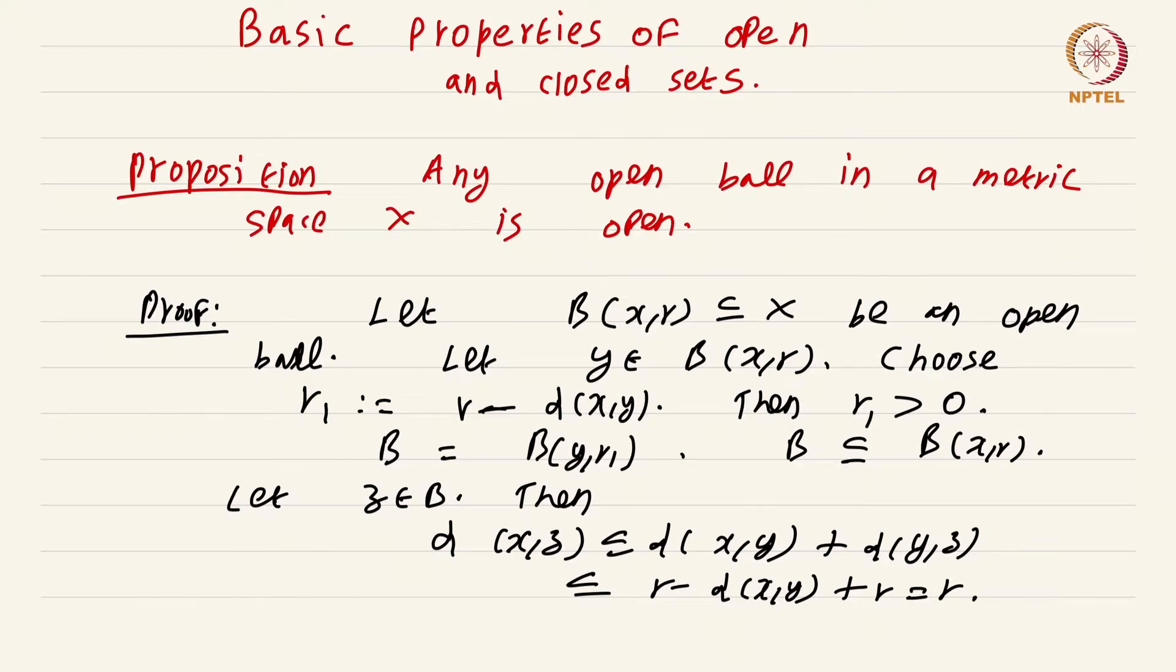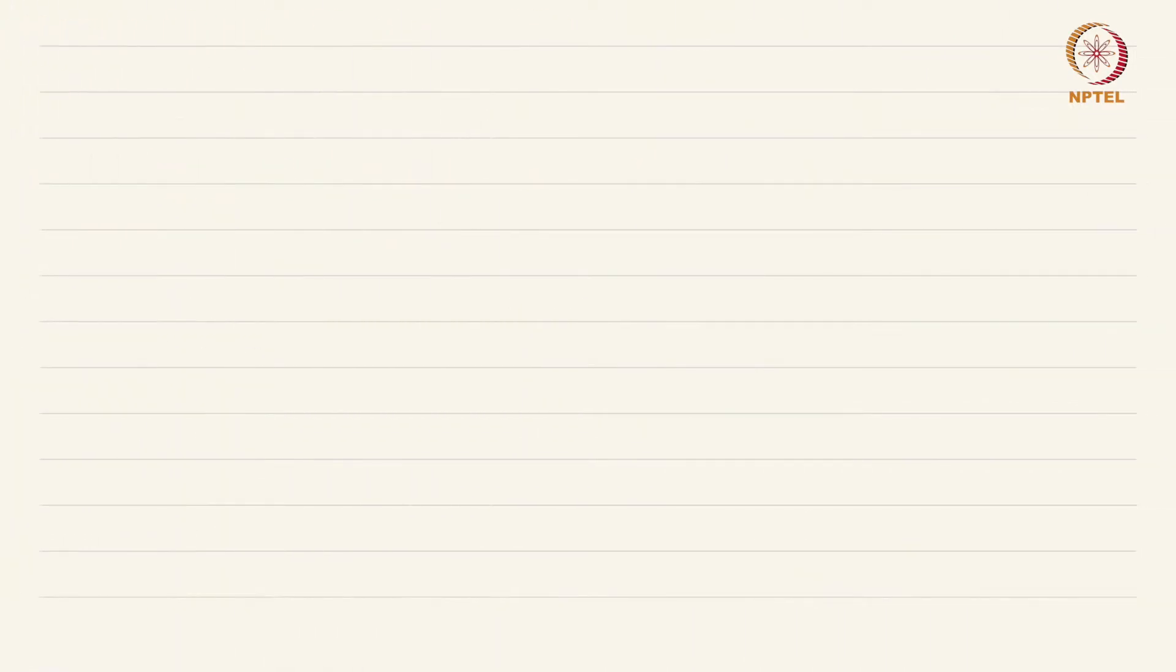So this proof was rather trivial. Now we are going to do a different characterization of open and closed sets. We are going to show that open and closed sets are dual notions. Again, the proofs of this are very similar to what we have already seen for the real numbers.